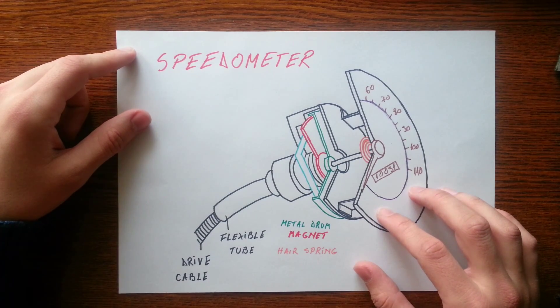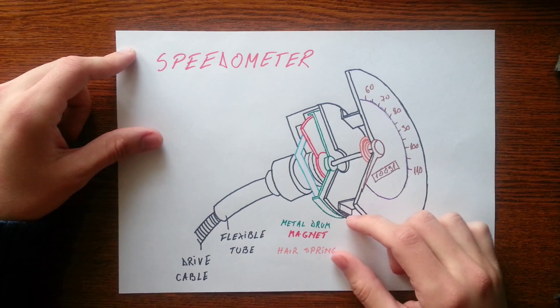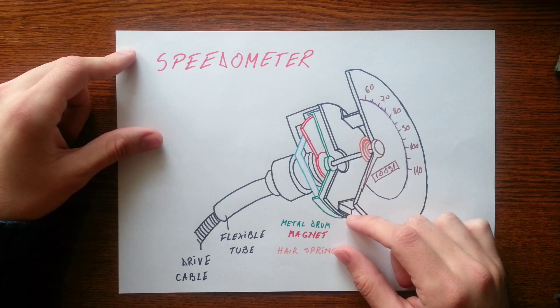Since the shaft is located downstream of the gearbox, the speed with which it rotates is independent of gear changes, and in this way gives a true measure of the road speed.